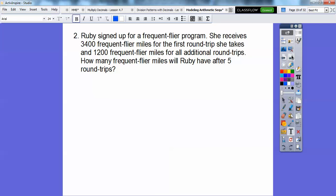So Ruby signed for a frequent flyer program. She receives 3,400 frequent flyer miles for the first round trip she takes and 1,200 frequent flyer miles for each additional round trip. So how many FF miles will Ruby have after five round trips? Our first term is this guy right here, and our common difference is 1,200. We keep adding 1,200 after every one.